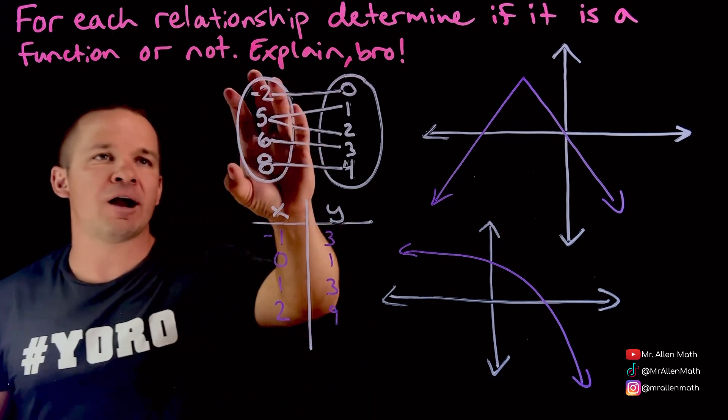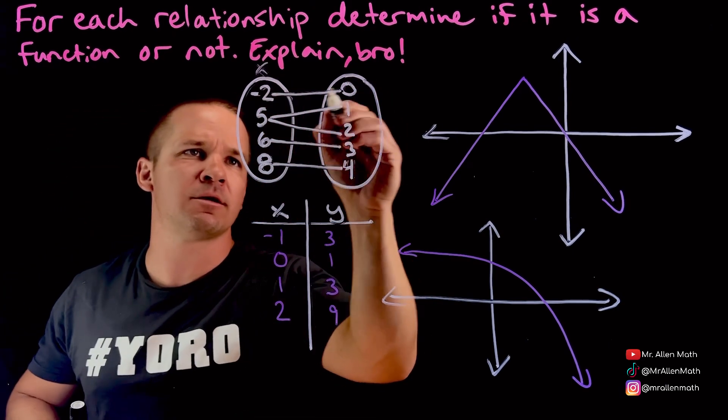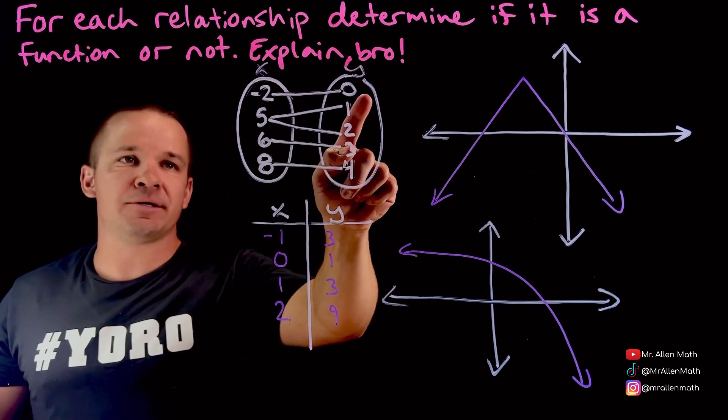So let's look at this first one here. We got our X's, we got our Y's. Maybe we should have that listed here. X, Y. So negative two maps onto zero, great.